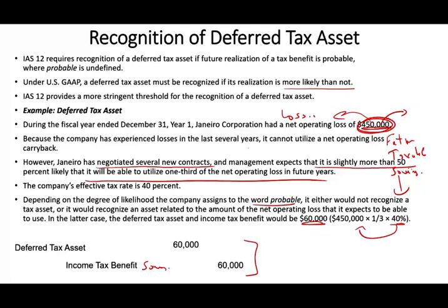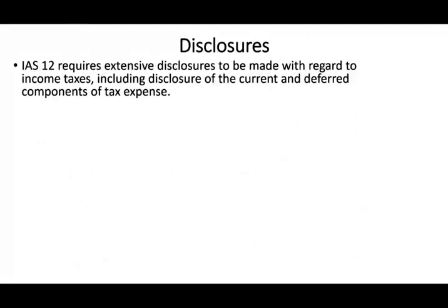That's what a deferred tax asset is. US GAAP and IFRS treat it the same way — go to my intermediate accounting channel if you don't understand the computation. For disclosure, IAS-12 requires extensive disclosures with regard to income taxes, including disclosure of the current and the deferred tax components. Every time you compute your taxes, you have two components: the current portion and the deferred portion.